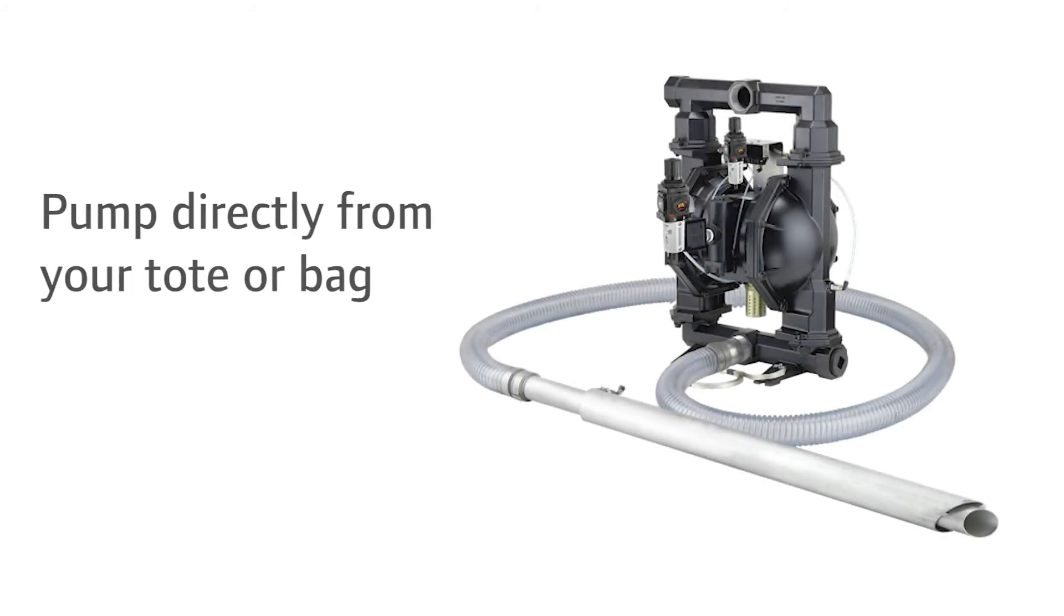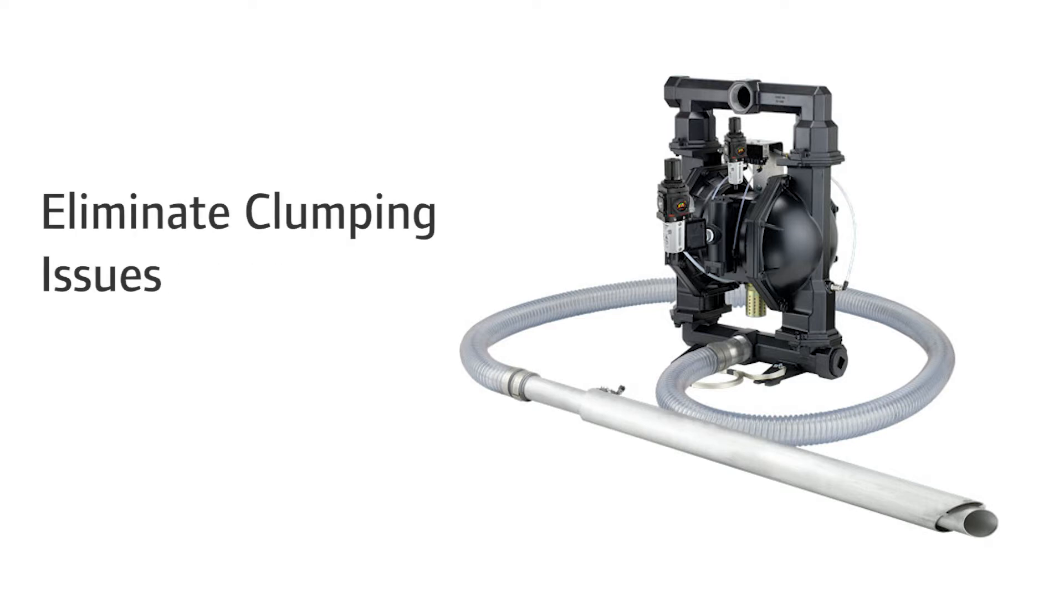The ARO powder pump is designed to eliminate all those issues by attaching the suction line directly to the powder pump and directly pumping from the tote or bag to get a smooth flow of powder through the pump into the mixing or blending tank. This also eliminates clumping issues by reducing the possibility that a worker will accidentally drop other material into the mix.